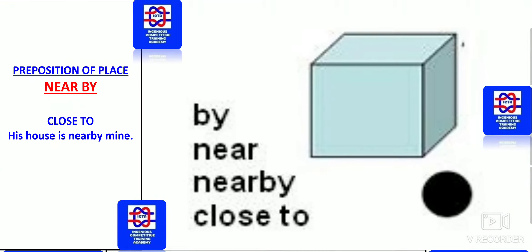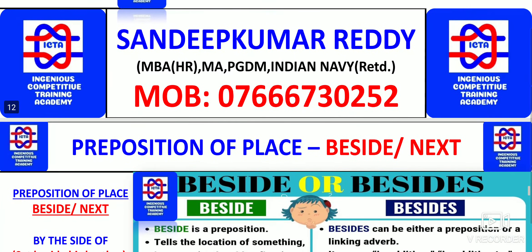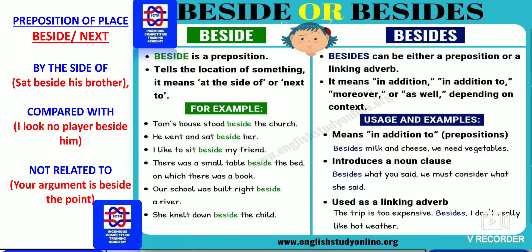Here the preposition of place with 'nearby': nearby means which is very close — he is nearby mine, meaning very close to his house. Next we have beside or next — beside means by the side of: she sat beside his brother, meaning just next to his brother. Compared with: I look no player beside him — there is no comparison with any other player. Beside the point: your argument is beside the point, meaning it is irrelevant. So beside is used for irrelevancy, comparison, and meaning just next to something.